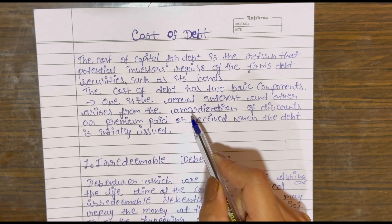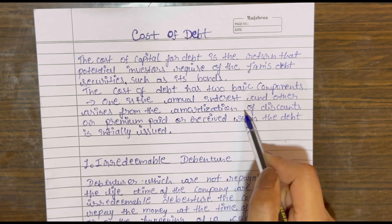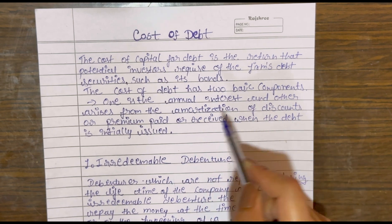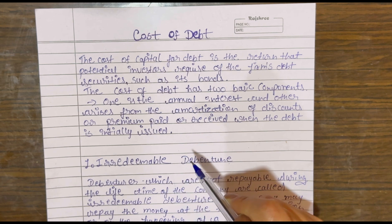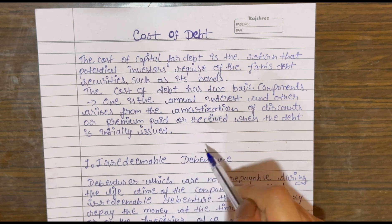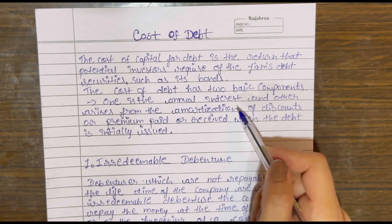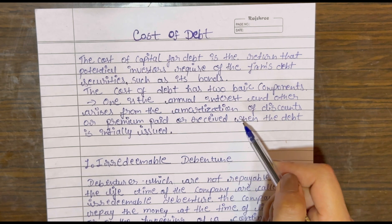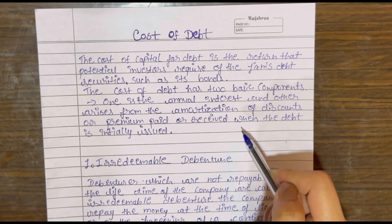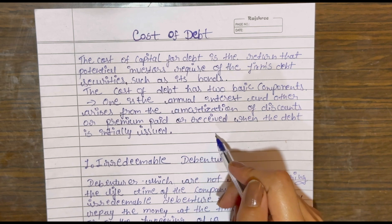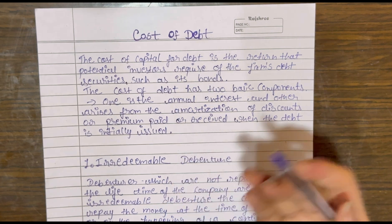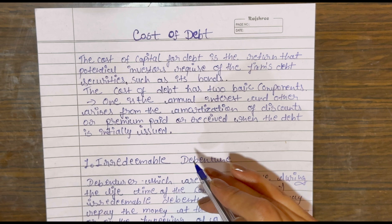First, the annual interest — how much interest you pay. You can see rates like 5%, 10%, 20%, which tells the interest rate. Second, you can see it issued at discount or premium. The premium means the price of the debenture is more than par value; the discount means it is less than par value.